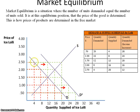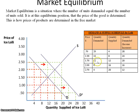Where do the supply and demand curves intersect? At $1.50. At that price, 12 units are demanded and 12 units are what the supplier is willing to supply. The supplier is willing to supply 12 units of lollies at $1.50, and the consumers are willing to demand 12 units — so at $1.50, all 12 units produced by the supplier will be purchased.